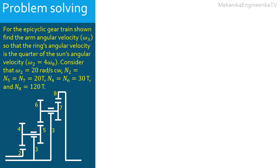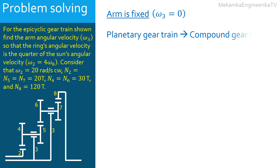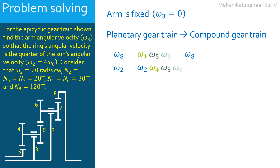In a first step, we will assume that the arm is fixed, or ω₃ = 0. In this case, the planetary gear train becomes a usual compound gear train. Let's calculate the ω₈ over ω₂ ratio. We need first to introduce the angular velocity of the intermediate gears 4, 5, 6, and 7. Thus, we will multiply N divided by ω₄, ω₅, ω₆, and ω₇.